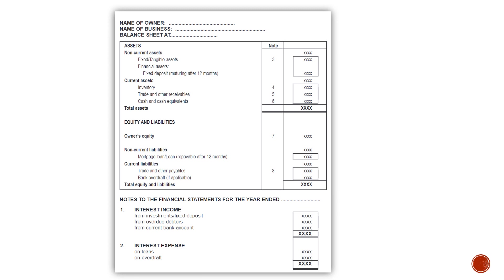Notes to the financial statements for the year in detail — you put in the year that you are doing this for. Note one: interest income. This will be the total of all of your interest income received — from investments, fixed deposits, from overdue debtors, from current bank account — totalled to give the total of your interest income.